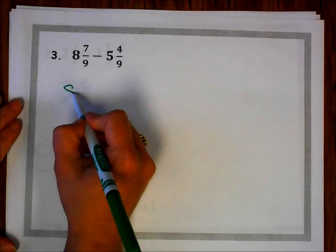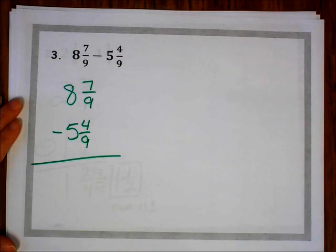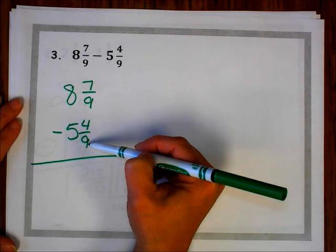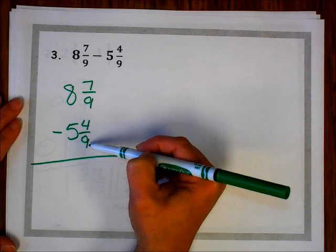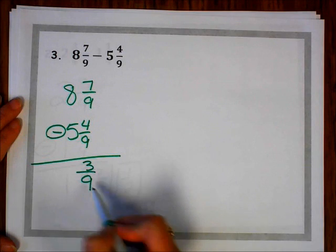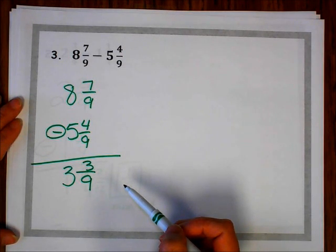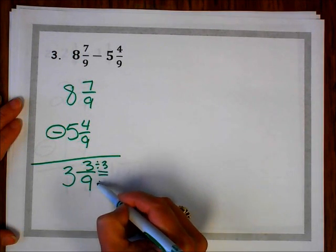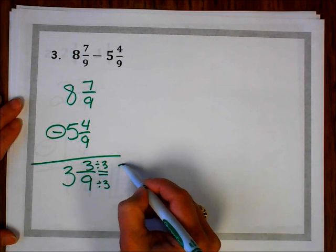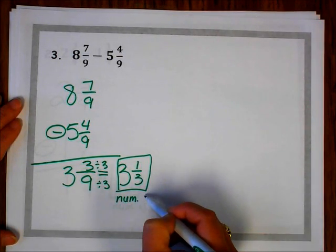Example number 3: 8 and 7 ninths minus 5 and 4 ninths. I would like for you to pause the video, try this one on your own, and when you're ready to check, hit play. Let's check your work. Did you notice that your denominators were already the same? That means I didn't have to find a common denominator, so I can subtract: 7 ninths minus 4 ninths is 3 ninths. Now subtract the whole numbers: 8 minus 5 is 3. My last step is to simplify. 3 divides into 3 and 3 divides into 9, so I can simplify by 3s to get 3 and 1 third. 1 third is in simplest form because my numerator is 1.